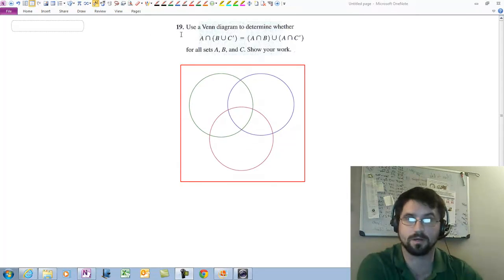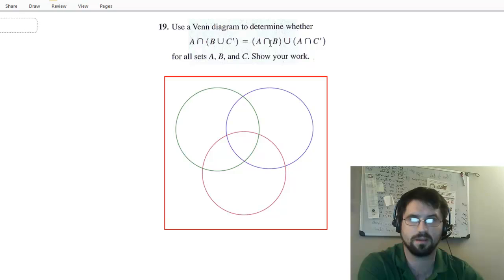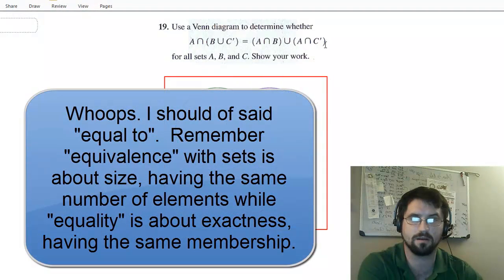Alright, this is Ken Rosever. I'm back. We're going to do number 19. Number 19 says use a Venn diagram to determine whether this set here is equivalent to that set there. And because there are A, B, and C represented in here, and we want to show it for all sets A, B, and C,